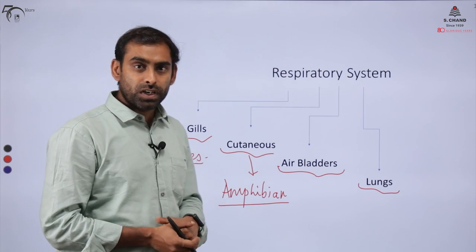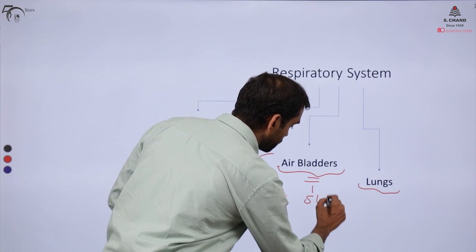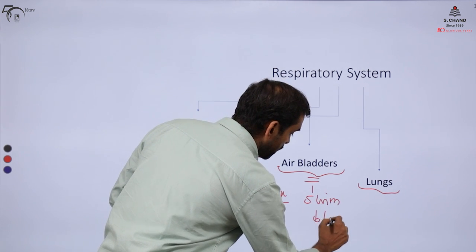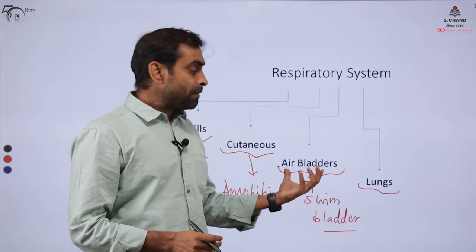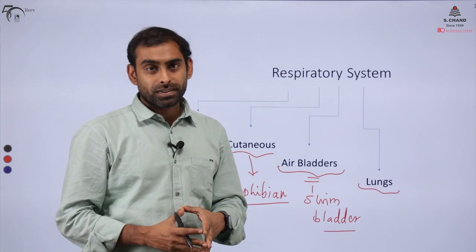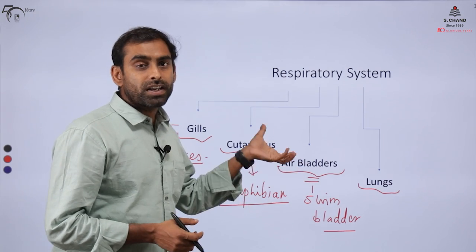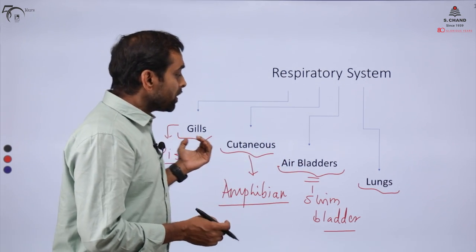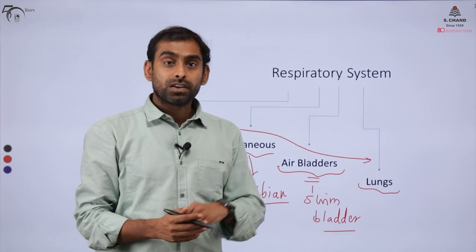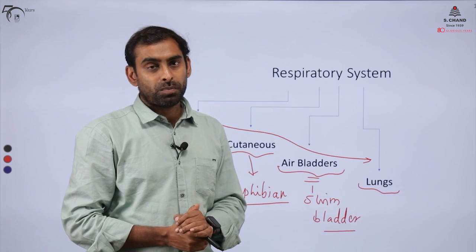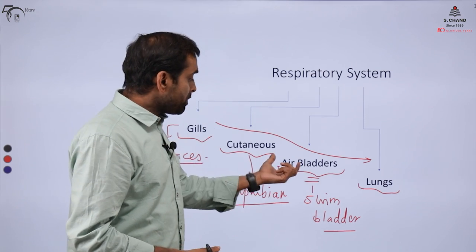Then we have air bladders, also called swim bladders. These are interesting organs present in some fish. They are analogous to our lungs and serve to store air; they also help fish in swimming. They can be considered a connecting link — when marine life came onto land, these rudimentary air sacs may have played a very important role in the development of lungs. Even in birds, you have air bladders which help them in flight.